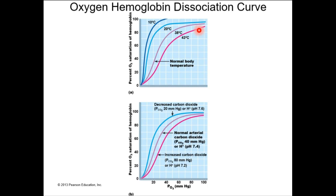As acidity increases, pH decreases. When you have more acidity, you have more free hydrogen ions — that's what an acid is. Those free hydrogen ions are going to mess with molecules, making them separate from each other. If that acid is present with oxygen bound to hemoglobin, it's going to make them separate. So high acidity creates a right shift: even with more oxygen around, less of it will be associated with hemoglobin, and it will dissociate more easily in an acidic environment.